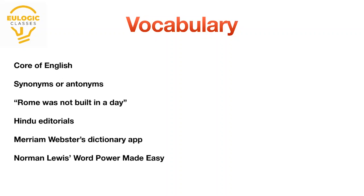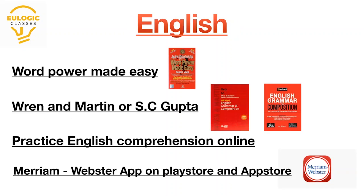For the vocabulary part I would highly recommend you all to go with the book Word Power Made Easy by Norman Lewis. It's a really interesting book — it will take time but it's really worth it. Do all the lessons from it and you will see a change in your vocabulary. To repeat the book recommendations: Number one is Word Power Made Easy by Norman Lewis for vocabulary, and Wren and Martin or S.C. Gupta for the grammar part.